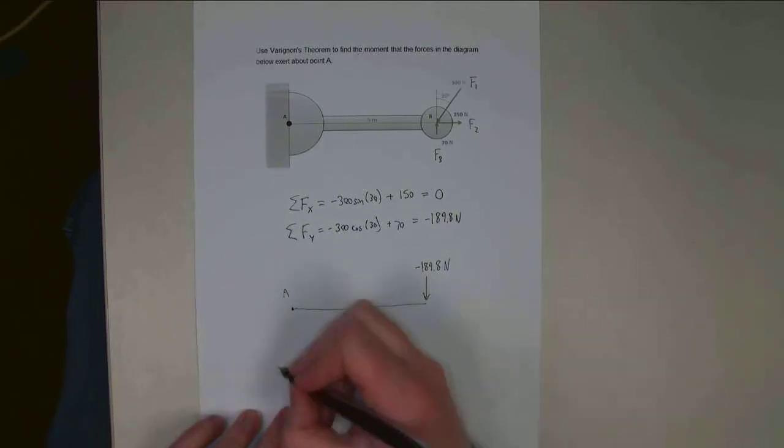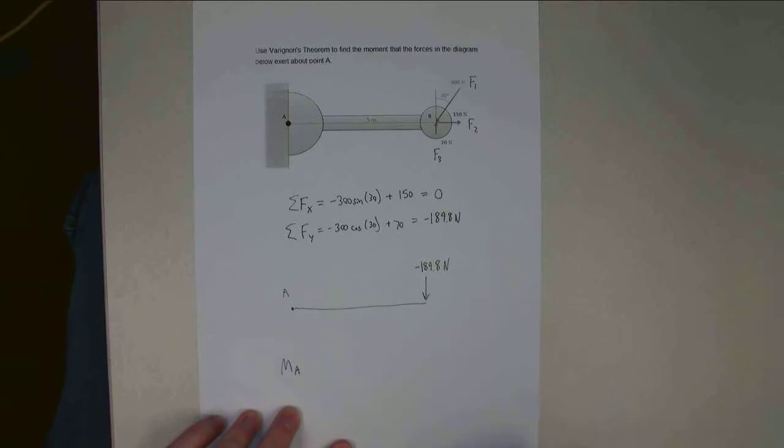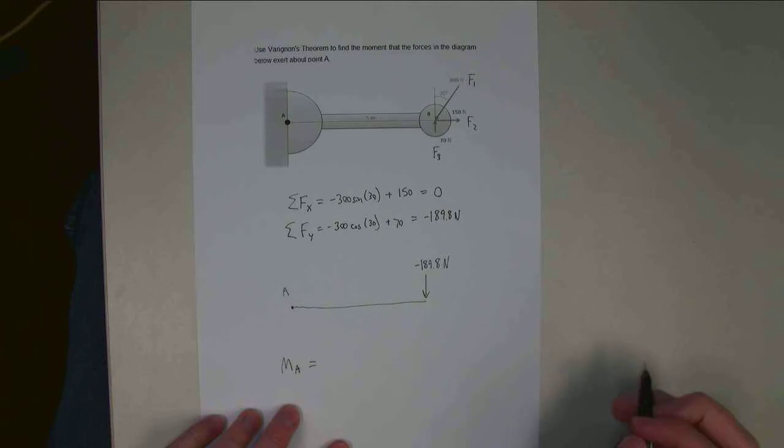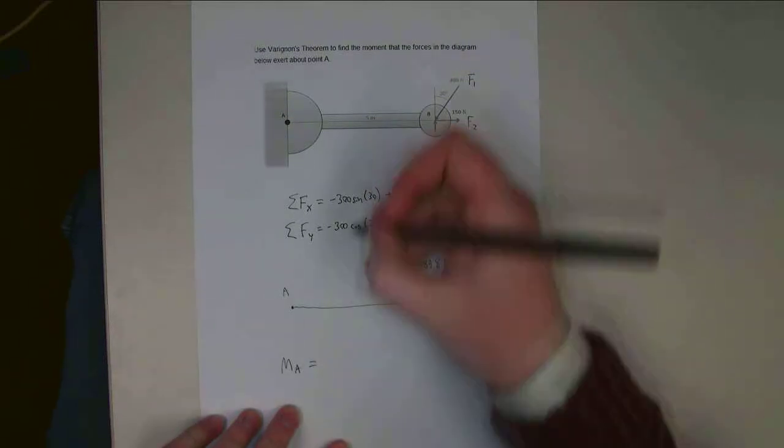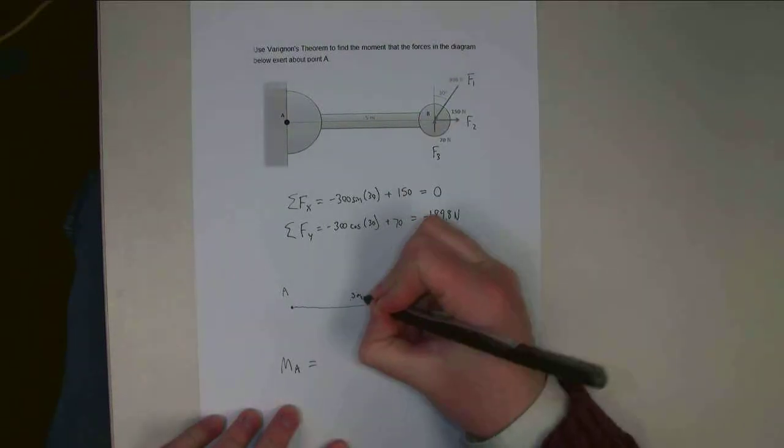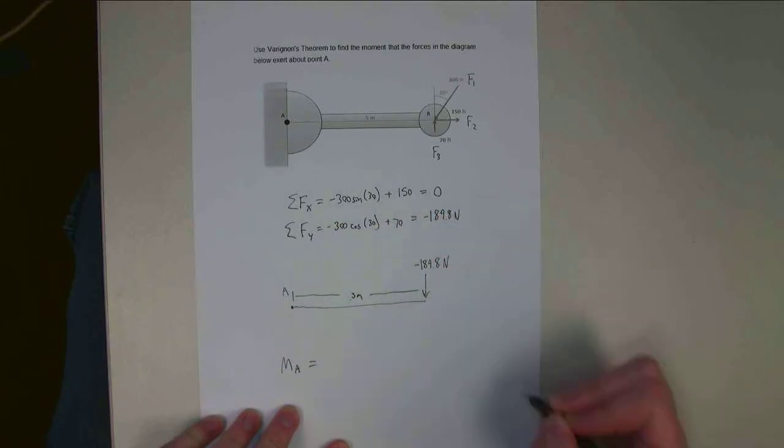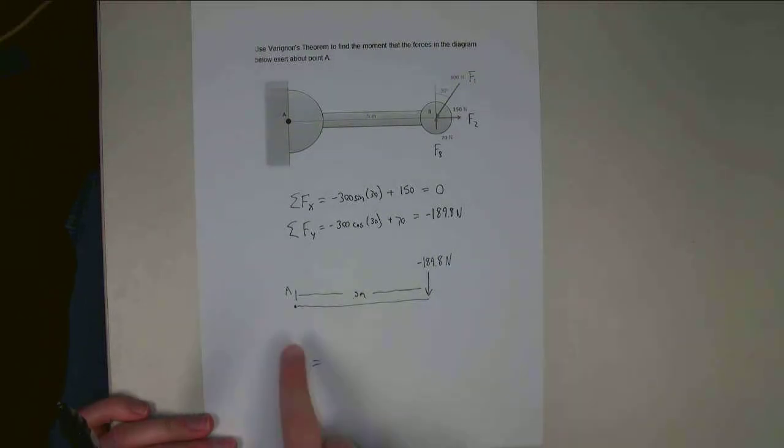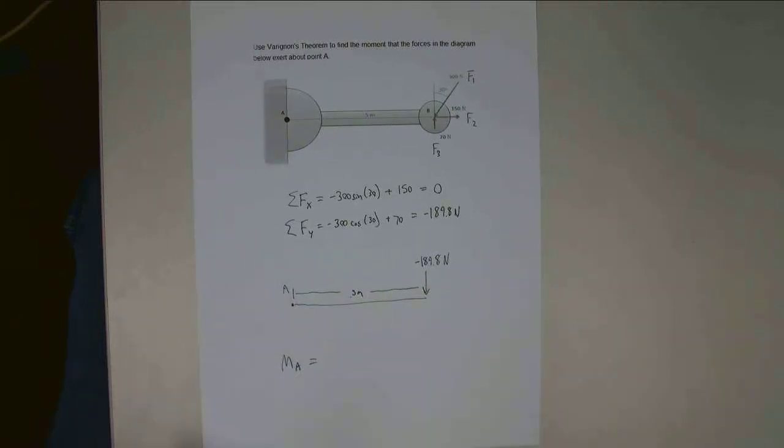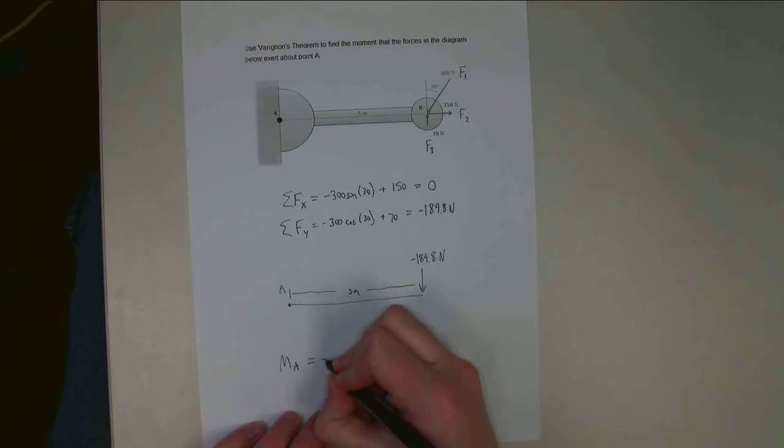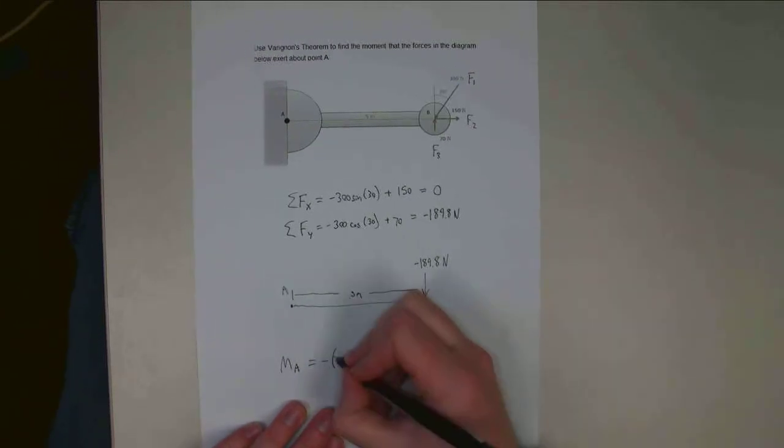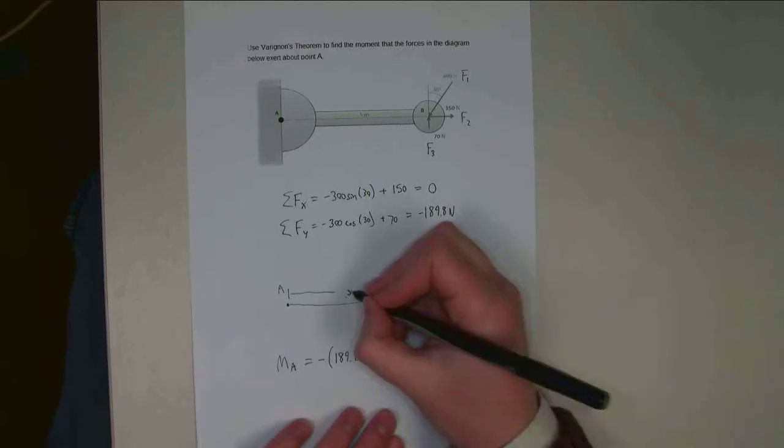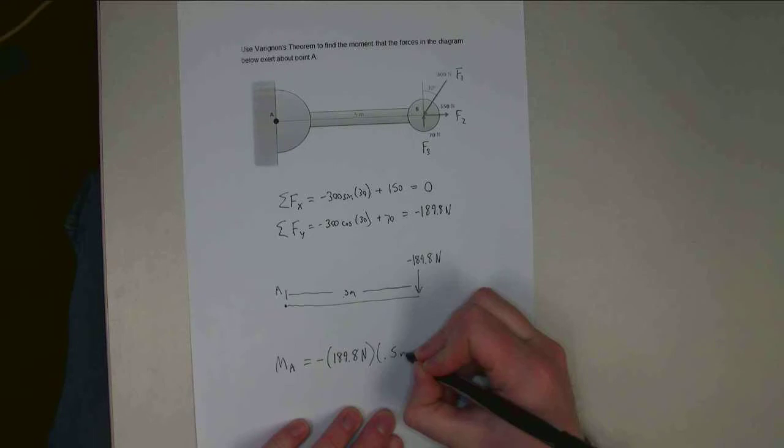So the moment that this force exerts about point A is going to be equal to the force times the distance. And so my distance here is going to be 0.5 meters, and my force is 189. I'm going to use the right hand rule. So this would cause, if I pin it down to point A, this would cause a clockwise rotation, it's going to be a negative rotation. So it's negative. The magnitude of the force is 189.8 newtons, and the distance is going to be 0.5 meters here.